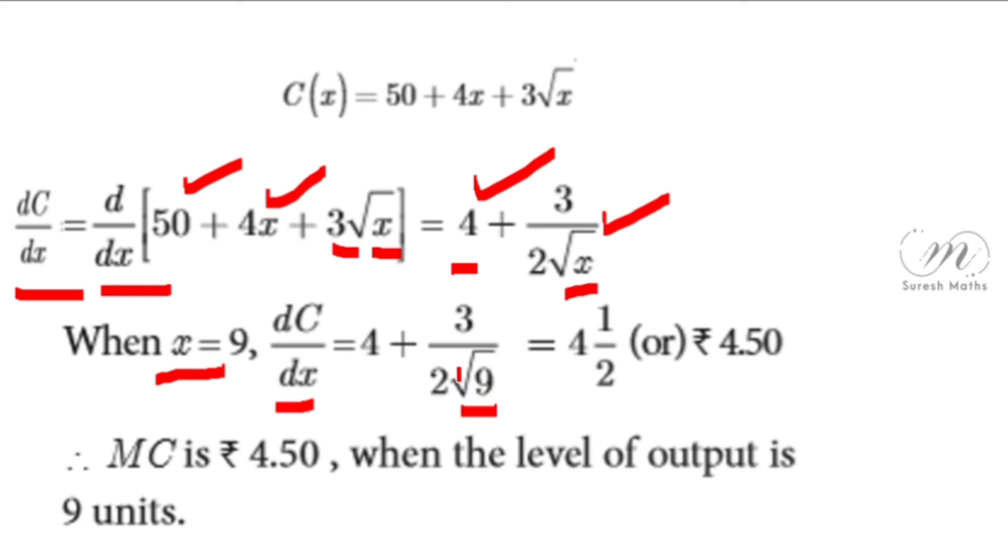Then 3/6 is 1/2, so 4 + 1/2 = 4.5, or ₹4.50. When the level of output is 9 units, MC is dC/dx = ₹4.50.